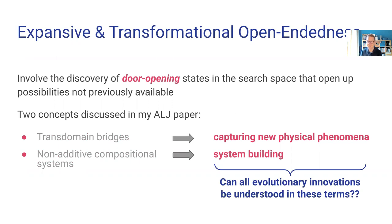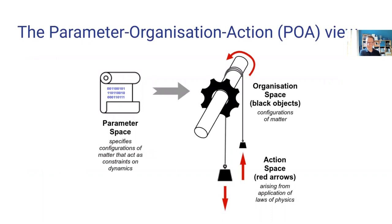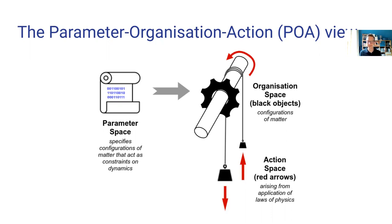Taking the first of these — new physical phenomena — at the end of the previous paper I introduced a new way of looking at behaviour in a system in terms of three different spaces. One is the parameter space: the information space of an organism that specifies some kind of material organisation in the world. That material organisation is then acted upon by the laws of physics or dynamics of the system to produce an action. So there are three distinct spaces: parameter space, organisation space, and action space.